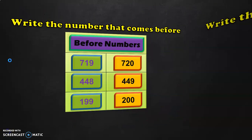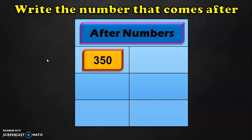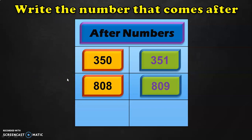Let us do the next number activity: after numbers. Write the number that comes after. For after numbers, always remember that you should do a forward counting — after always indicates a forward counting. Here I have given you the three-digit number 350. What is the number which comes after 350? It is 351 — a forward counting to arrive at the next number. What is the number which comes after 808? We know after 8 we have 9, so after 808 the number is 809.